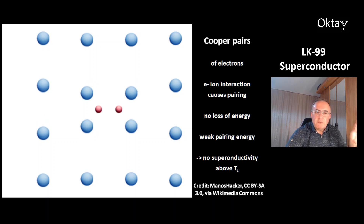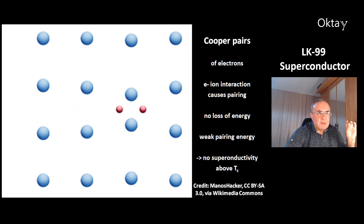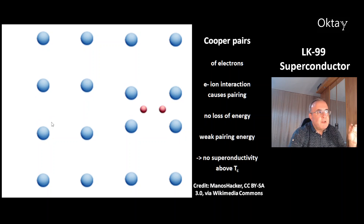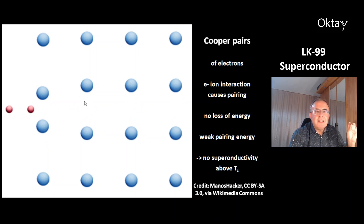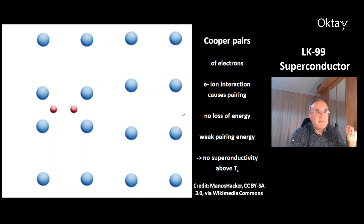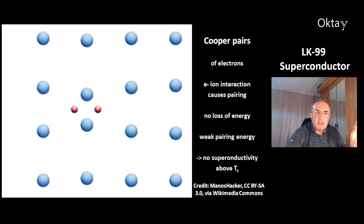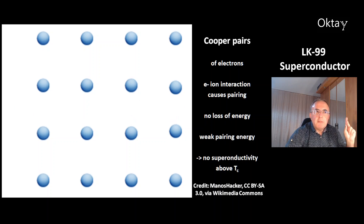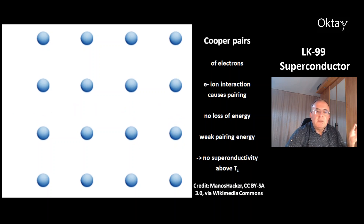This is an animation of Cooper pairs of electrons. This is an electron-ion interaction that causes this pairing. Once the first electron approaches the cations and they come together, you have a higher density, and this attracts the second electron — that makes the Cooper pair. What's special about the Cooper pair is it can travel through the structure without loss of energy. However, this pairing energy is very weak, and that's why there is no superconductivity above the critical temperature.